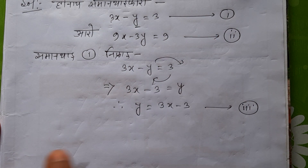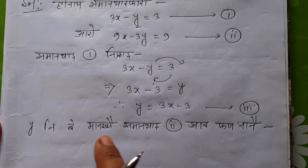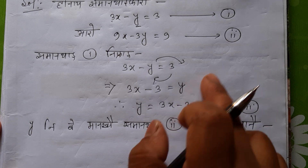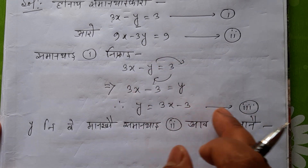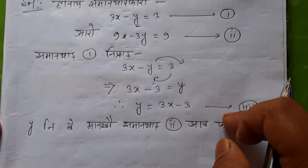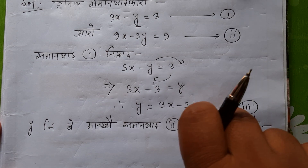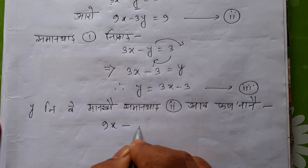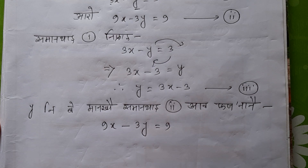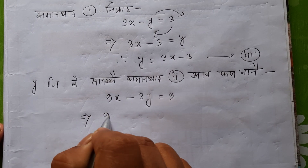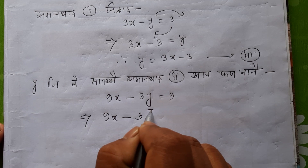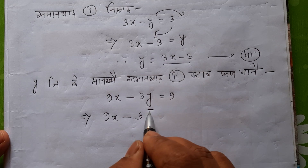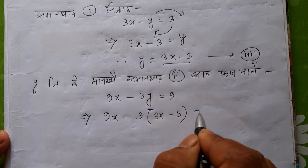So 1,3 is greater than 2. It's greater than 2. Substituting this value of y in equation number 2, we have 9x minus 3y equals 9. And y equals 3x minus 3, so we have 3x minus 3 is equal to 9.